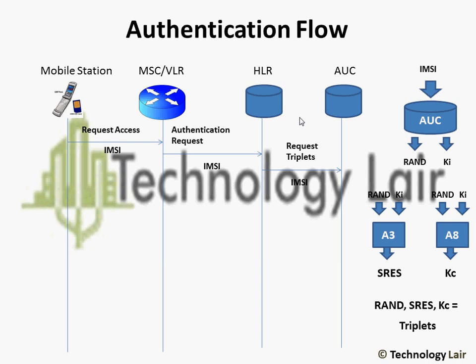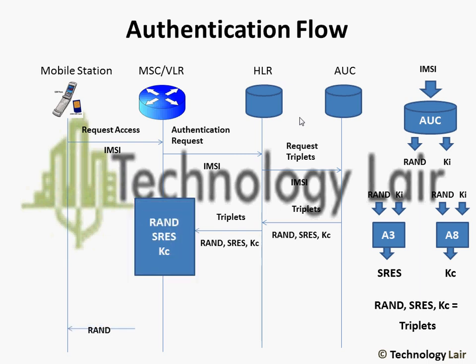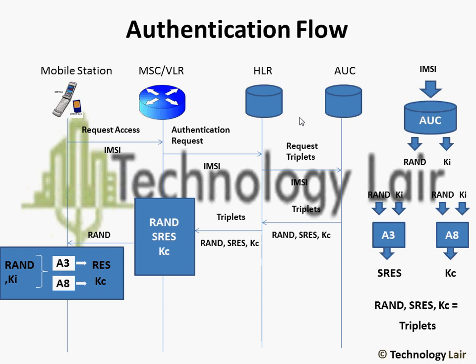Once the AUC has generated the triplets, it will forward them to the HLR. The HLR subsequently sends these triplets to the MSC VLR. The MSC VLR stores the KC and SRES but forwards the RAND to the mobile station in order to authenticate. The MS has the KI stored on the SIM card, and the A3 and A8 algorithms also reside on the SIM card. The RAND and KI are inputted into the A3 and A8 algorithms to generate the RES and KC respectively. The MS will send the RES to the MSC VLR, which matches the RES with the signed response from the authentication center. Once these two signed responses are matched, the mobile station is authenticated.